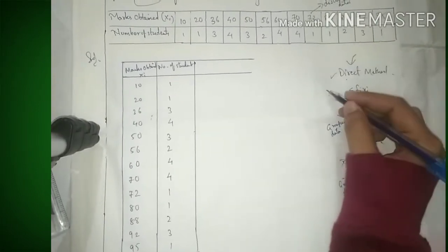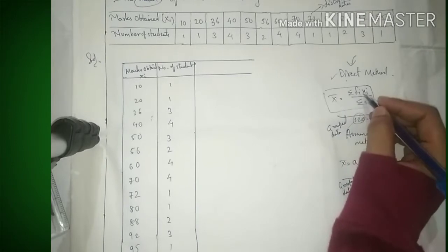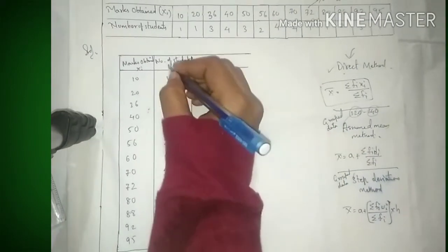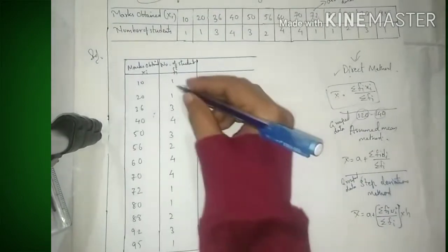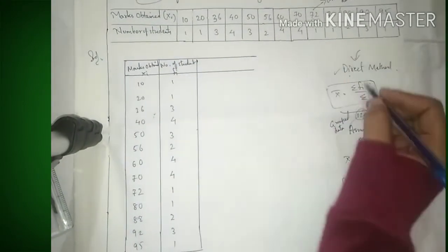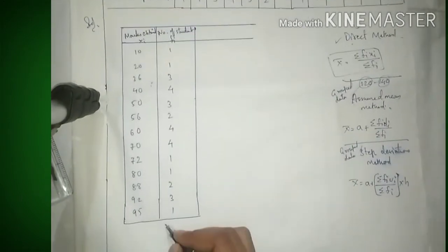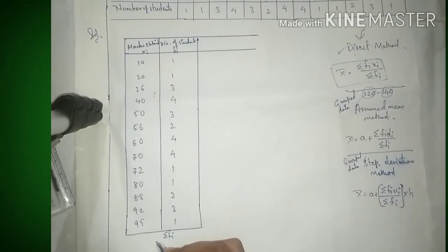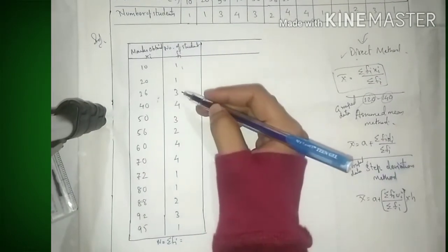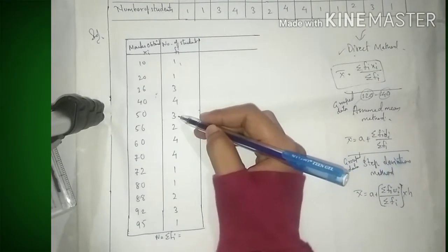Discrete data है, इसलिए Direct Method use करना है। Mean = average होता है। Number of students हमारी frequencies हैं, और marks obtained हमारे observations (xi) हैं। Formula में frequencies को add करना है: Σfi, जिसे n से भी denote करते हैं।